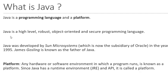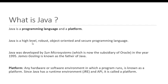Java is a high-level language. All programming languages are categorized into two types: low-level language and high-level language. Java belongs to the high-level programming language category.